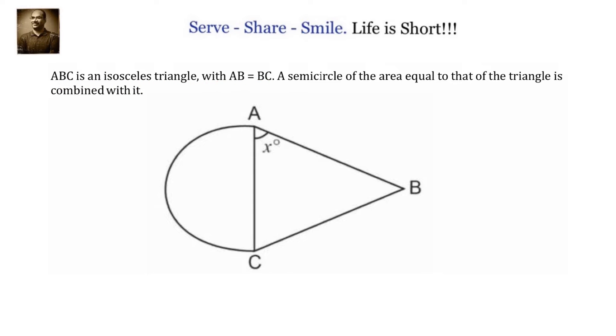ABC is an isosceles triangle with AB equals to BC. A semicircle of the area equal to that of the triangle is combined with it. What is the value of tan x?